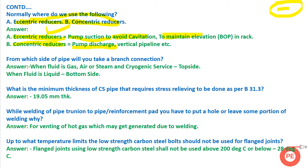From which side of the pipe do you take a branch connection? In case of gas, air, steam, and cryogenic services, we take the connection from the top side of the pipe. In case of water or liquid services, we take the connection from the bottom side. For liquid, if we tap from the top, there may be air entrapment problems in the network later, so bottom tapping is preferred.